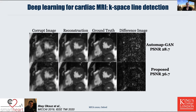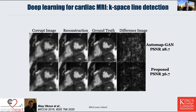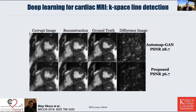Here are some examples. You see a corrupted image on the left, the reconstruction next to it, the ground truth, and the difference image. We compare two methods: the upper row is our previous AutoMAP-GAN method and the bottom is our proposed method, which has a higher PSNR and lower difference features.